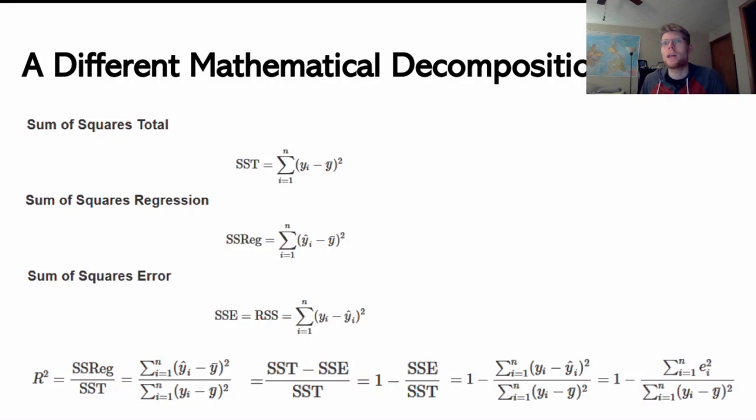The sum of squares regression is going to be the variance that is explained. It's the variance that I can take away. By looking at this sum of squares of y-hat minus y-bar, I'm basically measuring how much variability I explain by making this prediction. The sum of squares error is going to be the amount of variability that's still left over. It's the distance from y-hat to my actual data points, y.